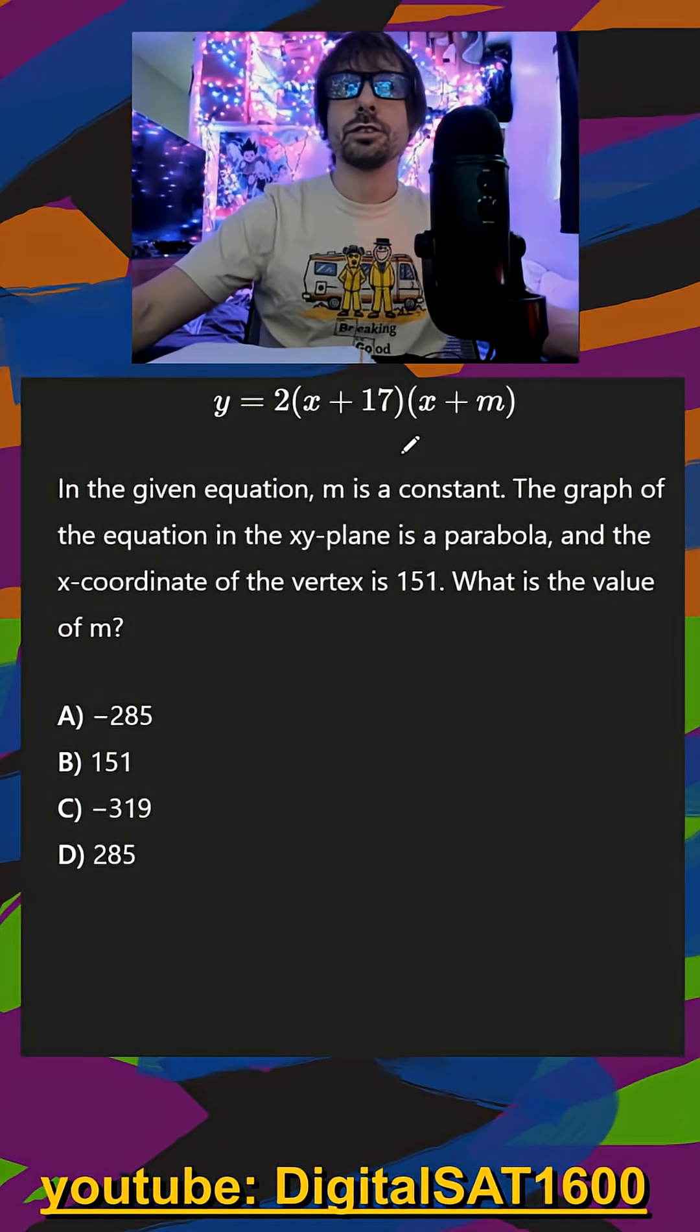I see a function up above in factored form. They say m is a constant, that it's a parabola, and the x-coordinate of our vertex is 151. And here's where you want to remember all your little tricks. Factored form tells us our two x-intercepts.